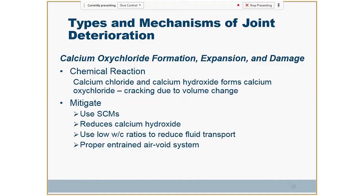Saturated freeze-thaw damage is one we really feel is going on, and we're trying to address what needs to be done to mitigate that. The other mechanism of joint deterioration we've really come upon is called calcium oxychloride formation, expansion, and damage. It is a chemical reaction going on between the cement and the icing chemicals we're using. We've changed icing procedures tremendously over the last 10 to 15 years — doing a lot of brine, and we see evidence of problems when we get a slurry that settles into those joints and saturates the concrete. The good news is we're finding things that can help mitigate that: more use of supplemental cementitious materials, keeping the water-cement ratio low, and making sure we have the proper air-entrained void system.